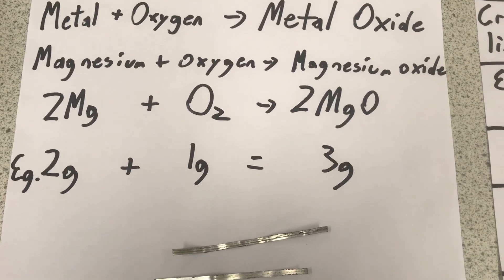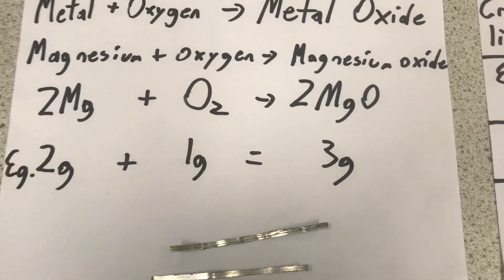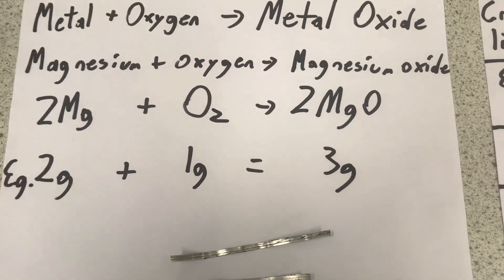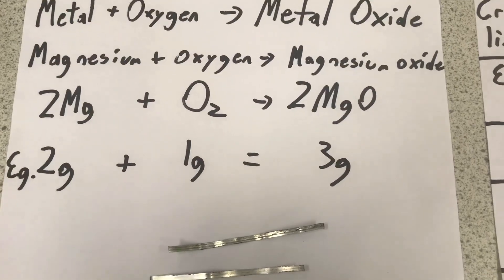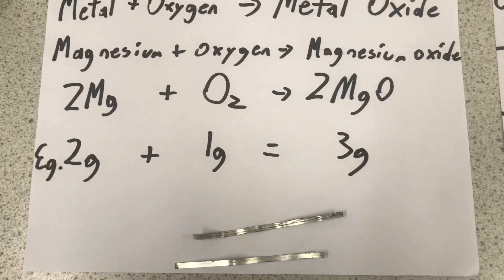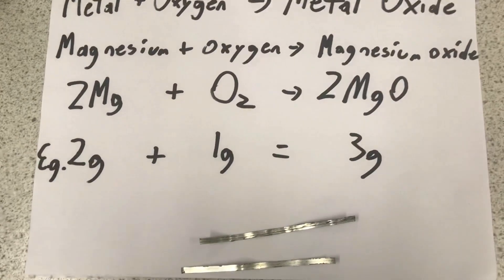Today, we'll be investigating the law of conservation of mass. The law of conservation of mass states that matter cannot be created or destroyed. So, in the simplest of terms, the mass of the products is equal to the mass of the reactants.